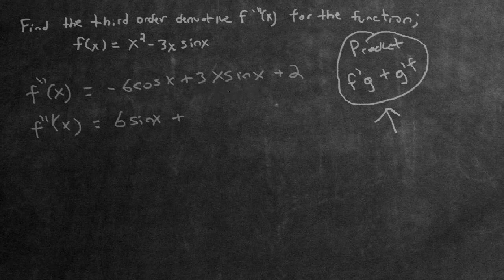Now we have to take the derivative of the 3x sine x term. If we factor out the 3, we just have to take it from the x sine x. We have to use the product rule again. The derivative of x is 1, then we leave g alone which is sine x, then add, then the derivative of g which is cosine x, and then we leave x alone, so we add x again to the outside.